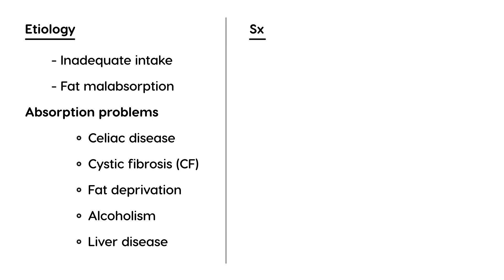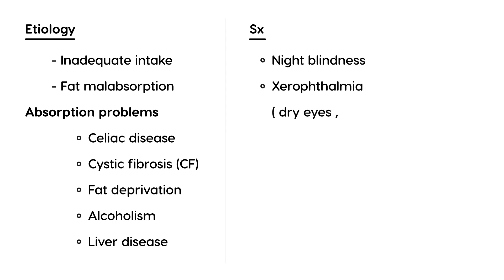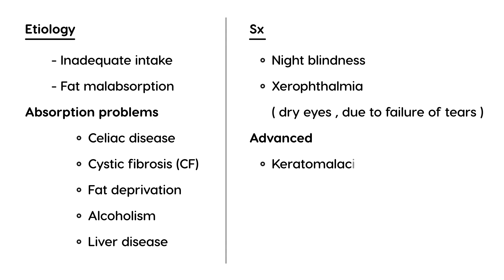In terms of symptoms, the most famous one is night blindness, because vitamin A is needed for that photoreceptor pigment in the retina — without it, it's very difficult to see in low-light conditions. Another common finding is xerophthalmia, which is dry eyes due to failure of tear production. In advanced cases, keratomalacia can occur — the cornea becomes hazy, with erosions on the surface detectable on eye exam. A rarer finding is alopecia, where hair starts falling out.